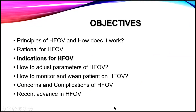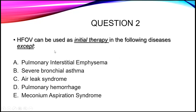When should we start HFOV? The question: HFOV can be used as initial therapy in all of the following diseases except one — pulmonary interstitial emphysema, severe bronchial asthma, air leak syndrome, pulmonary hemorrhage, or meconium aspiration syndrome? Most of you chose severe bronchial asthma, which is not appropriate for HFOV. In general, HFOV is more suitable and effective for parenchymal or restrictive lung diseases like RDS and ARDS, but not for obstructive lung diseases like bronchiolitis, asthma, or chronic airway disease — HFOV can even worsen bronchospasm.